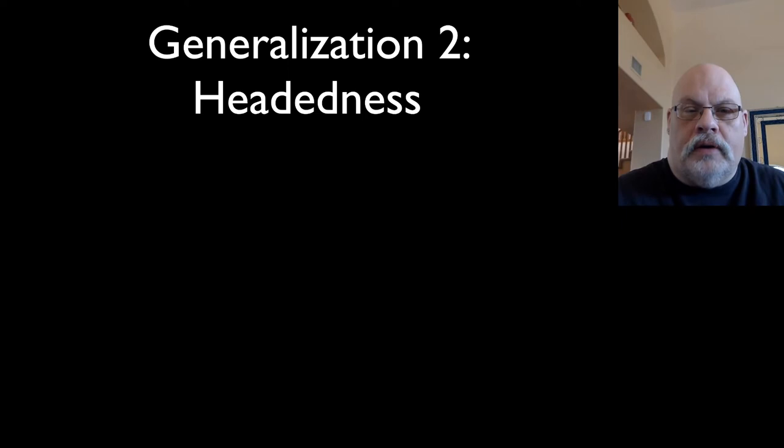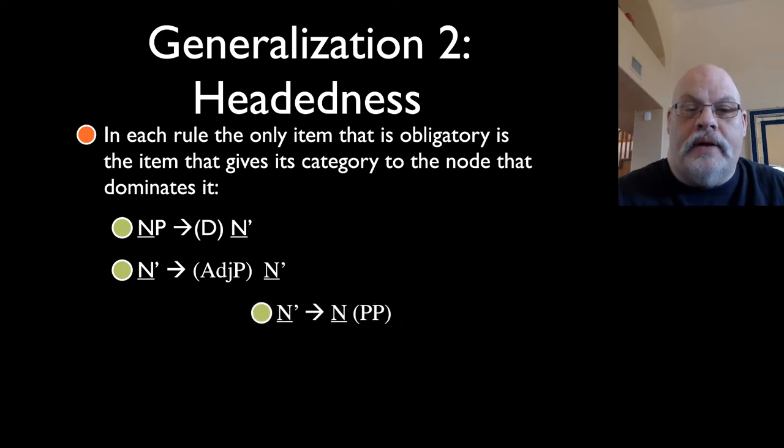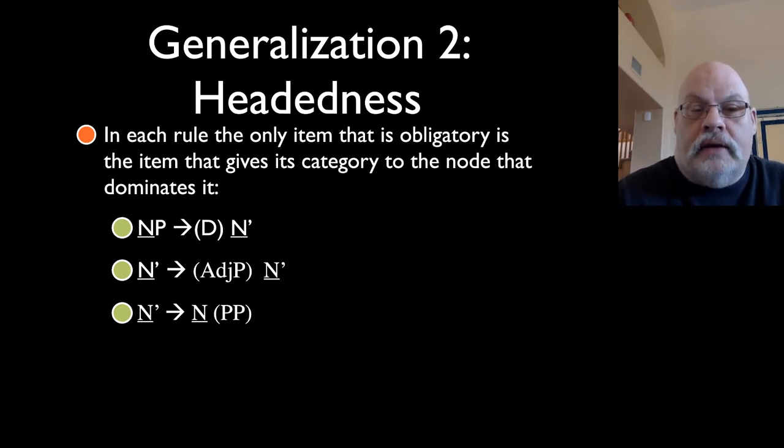The second generalization we want to make is that within those three rules, the only thing that's ever obligatory is the category that gives its node to the name above it, that is its head. So for example, the NP specifier rule has an n-bar head. The adjunct rule has an n-bar head, and the complement rule has an n head. This is the notion of headedness, it's also called endocentricity. So noun phrases always have nouns in them.